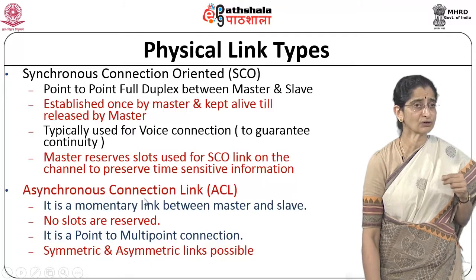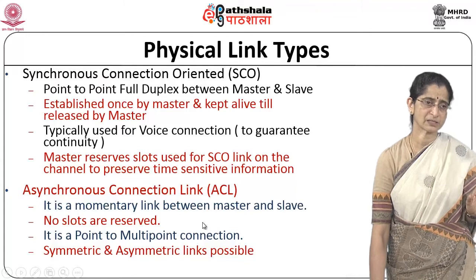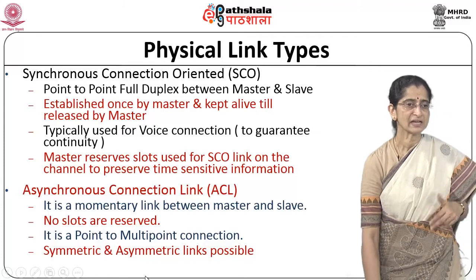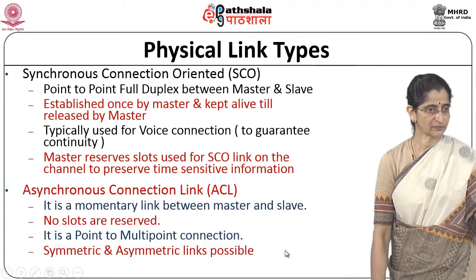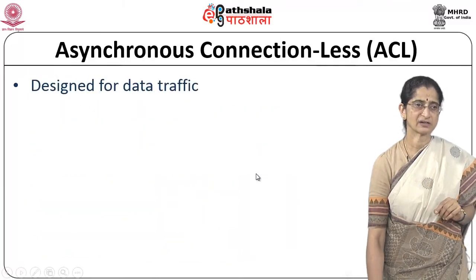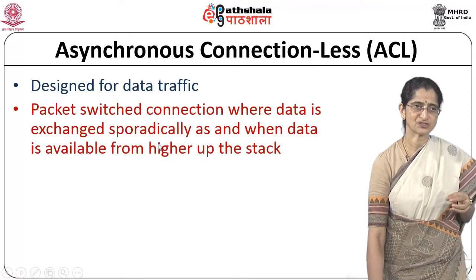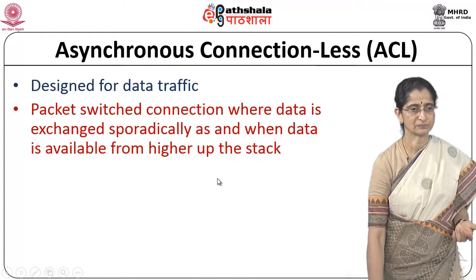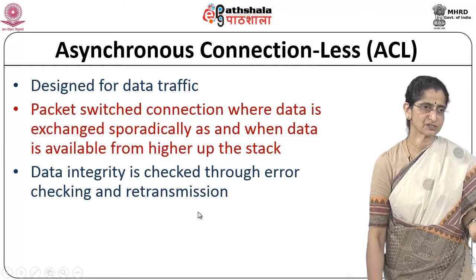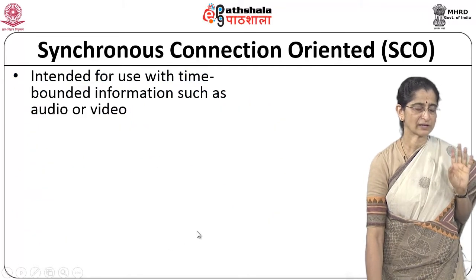The second link type is the Asynchronous Connection Link (ACL). This is a momentary link between master and slave with no reservation of slots, and it can also be a point-to-multipoint connection. Symmetric and asymmetric links are possible. The ACL is designed for data traffic and packet-switched connections where data is exchanged sporadically. Data integrity is checked through error checking, and retransmission is done if there is an error. Normally there is one ACL link between a master and a slave.